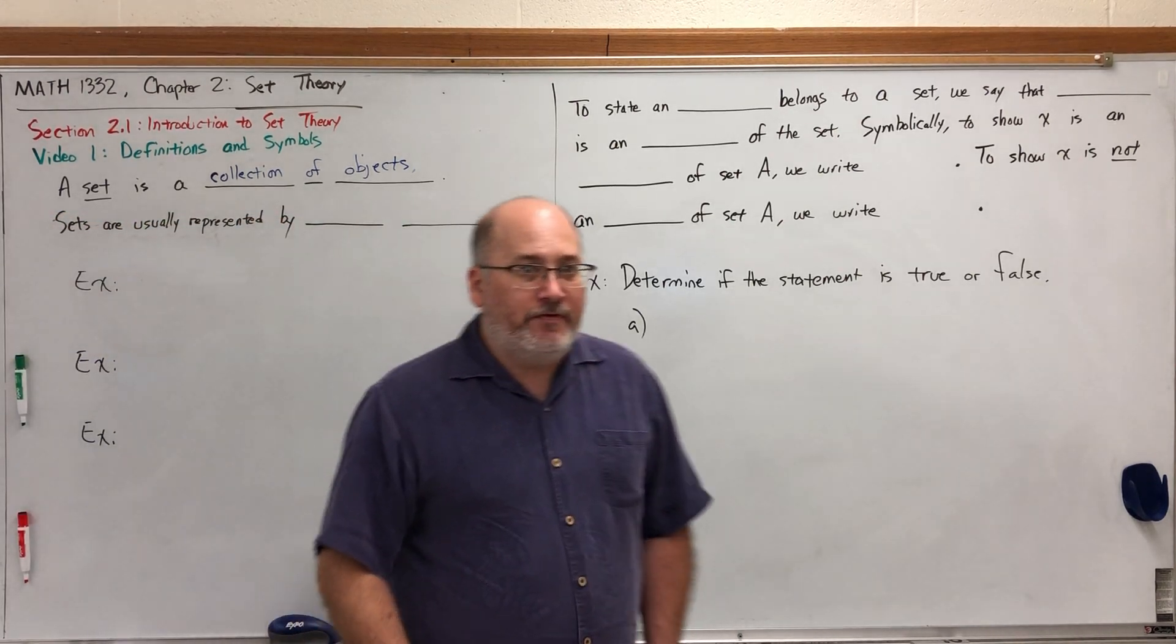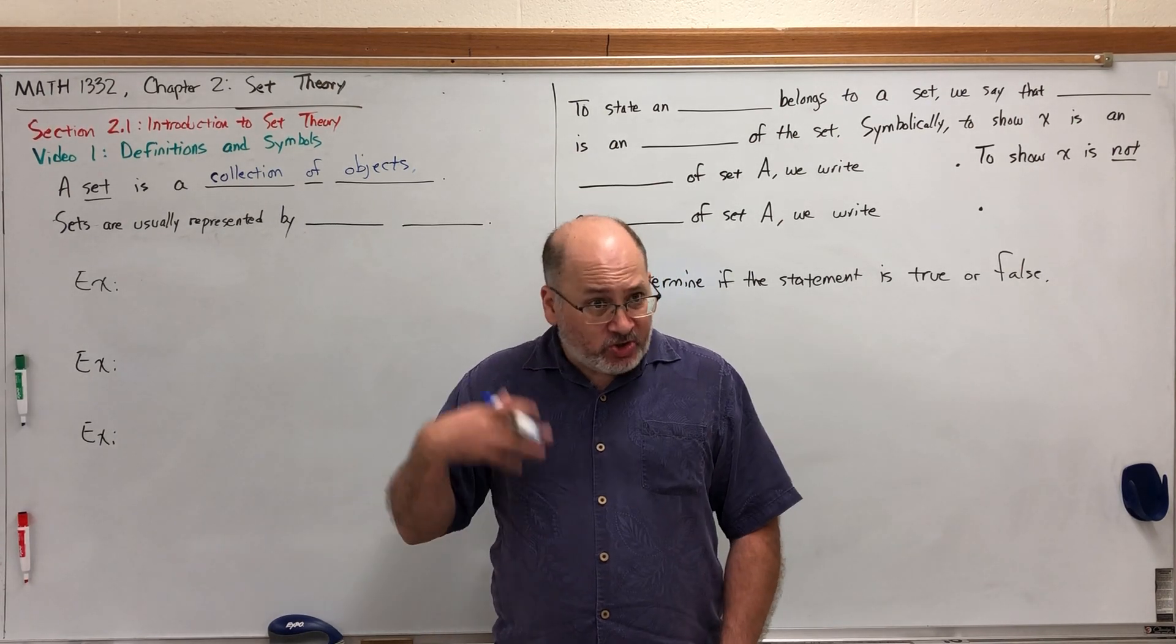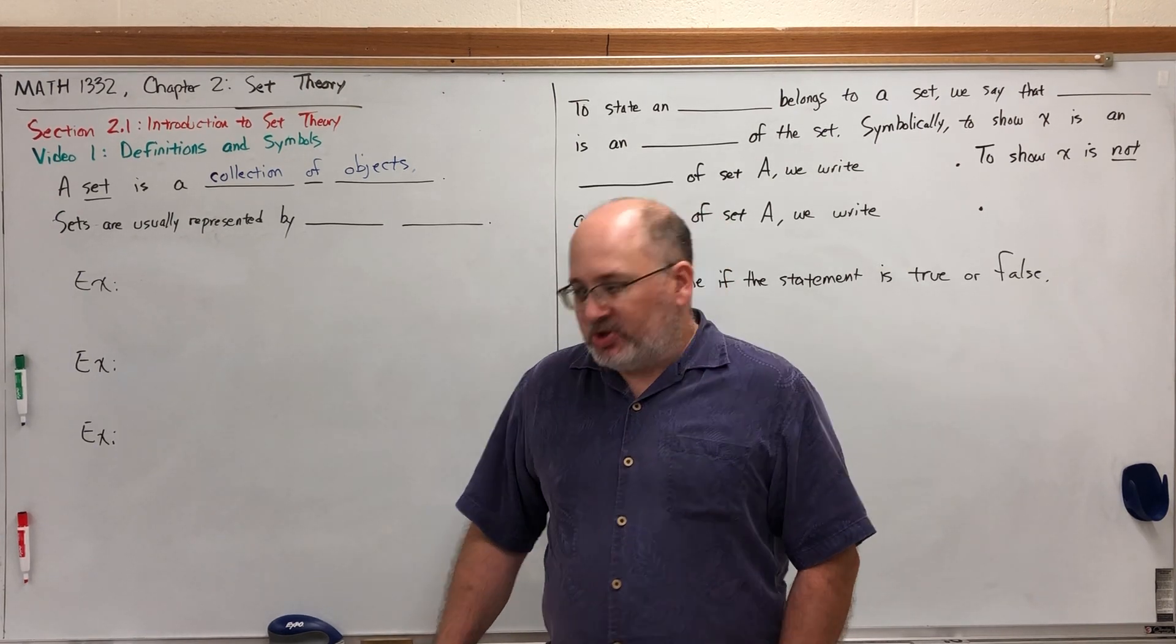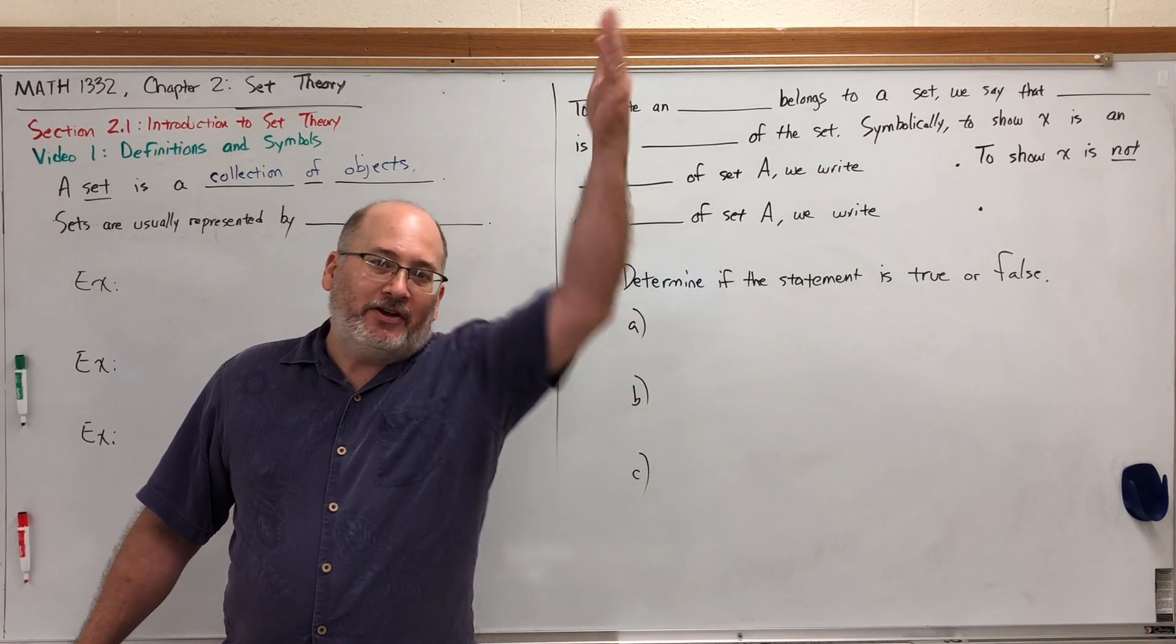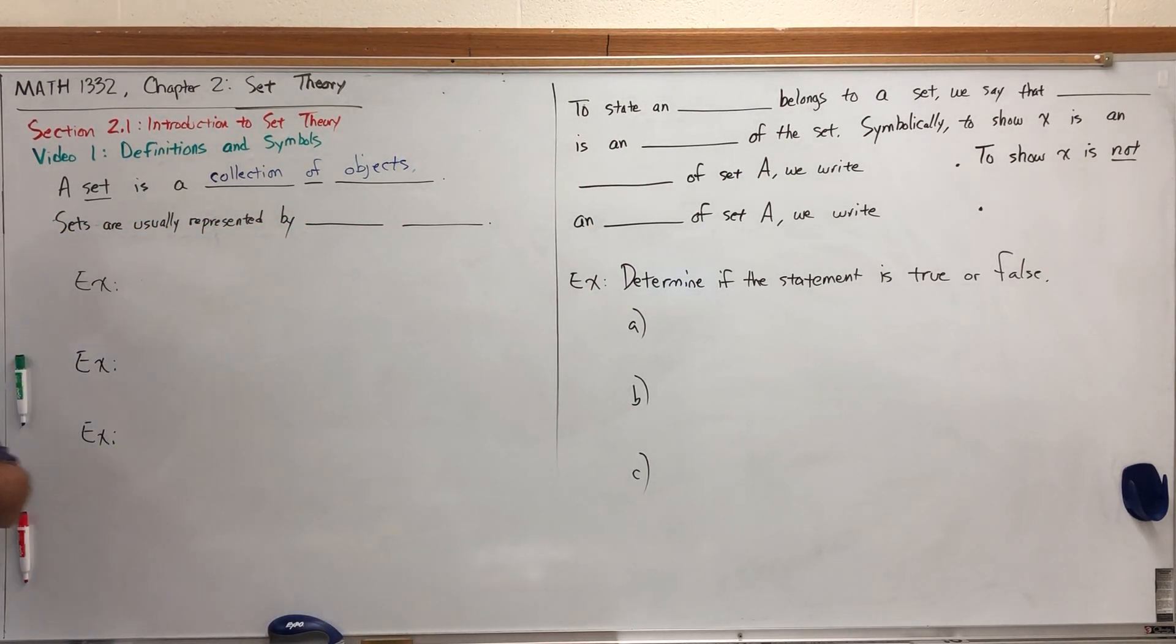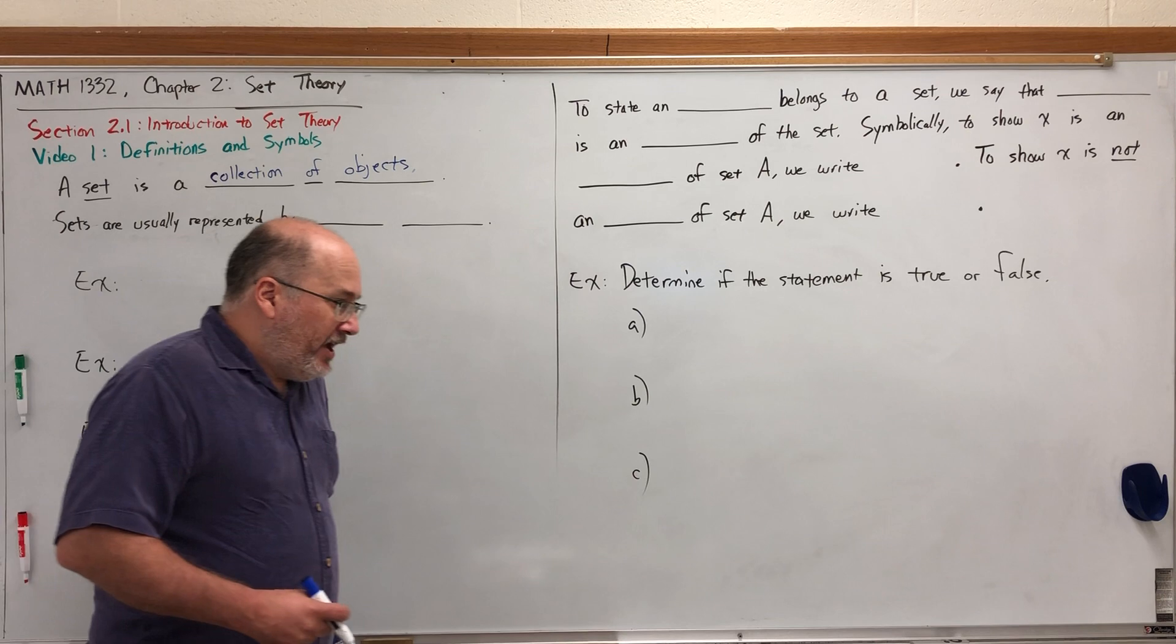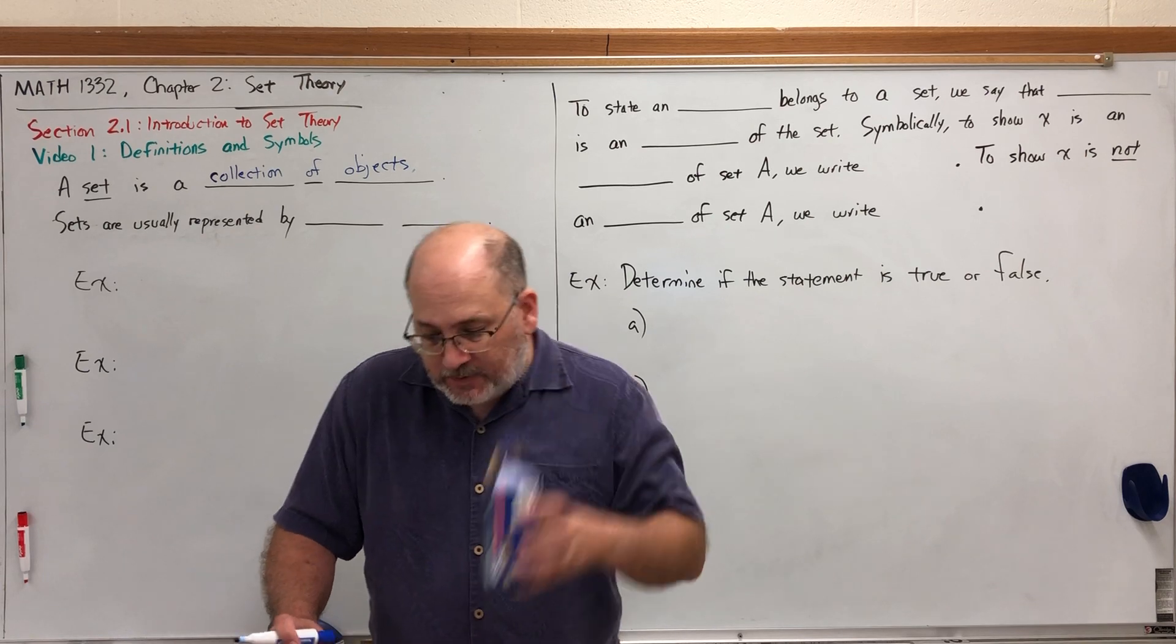The pure mathematician will argue that this definition is circular—eventually you have to define it using itself. The entire dictionary is circular at some point. But I think we can all agree that we understand what a collection of objects is: a basket of eggs, a cart full of groceries, a set of markers in this box.